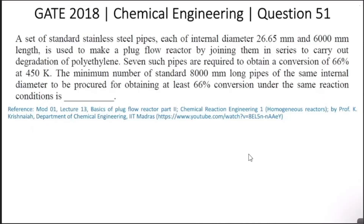This is question number 51 from GATE 2018 chemical engineering. A set of standard stainless steel pipes, each of internal diameter 26.65 mm and 6000 mm length, is used to make a plug flow reactor by joining them in series to carry out the degradation of polyethylene. Seven such pipes are required to obtain a conversion of 66% at 450 Kelvin. The minimum number of standard 8000 mm long pipes of the same internal diameter to be procured for obtaining at least 66% conversion under the same reaction conditions is to be found.